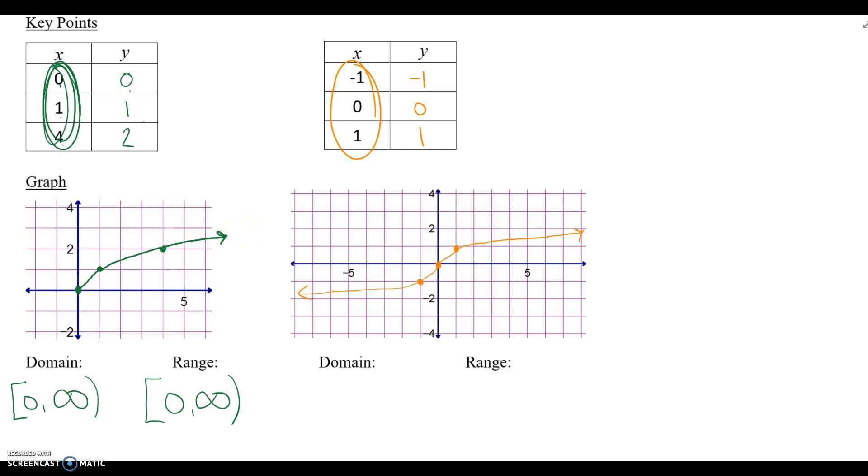Now cubed root is going to be slightly different. We're going to be going to the left infinitely, and to the right infinitely, so our domain, and same with our range, again, is negative infinity to infinity, and we have soft brackets.